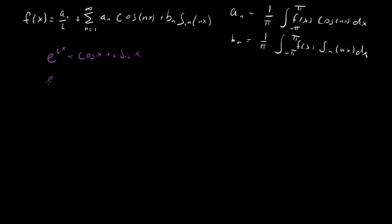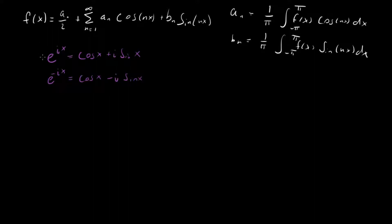And likewise, e to the minus ix equals cosine x minus i sine x, because cosine is an even function so it stays the same, but sine is an odd function so you pull out a minus sign. We're trying to re-express our Fourier series in terms of complex exponentials, so let's solve for cosine and sine in terms of these complex exponentials.